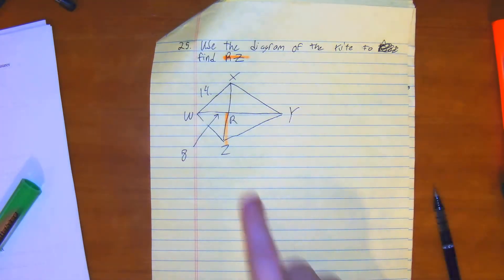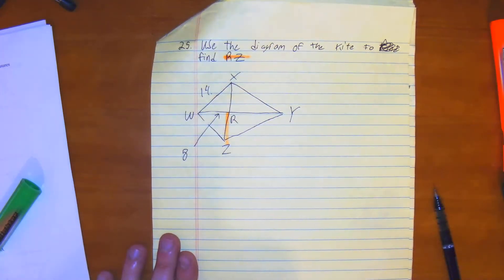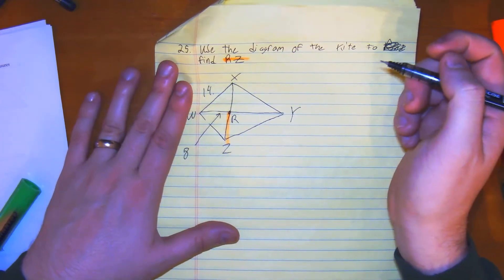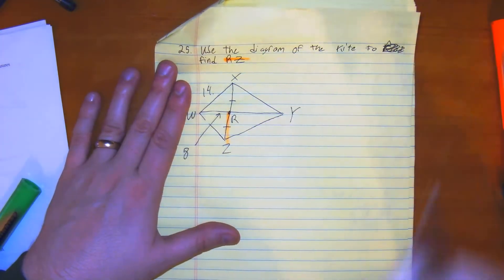We do know that we're working with these lengths right here. And we do know that this R is a midpoint between X and Z. So these are congruent to each other.